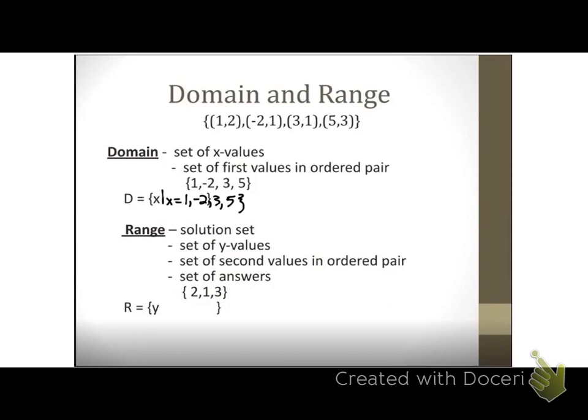An ordered pair is always X, Y. So the Y values will always be that second number in your ordered pair. First Y value is 2, second Y value is 1, third Y value is also 1 — but since I've already listed 1, I don't have to list it again when denoting my set of Y values. Fourth Y value is 3. If you have a repeated Y value, you do not have to write it twice in your domain and range.